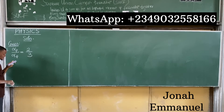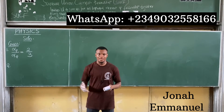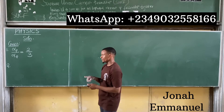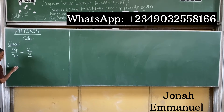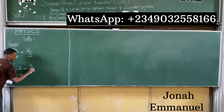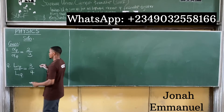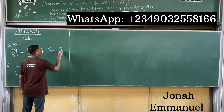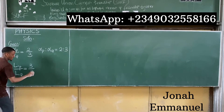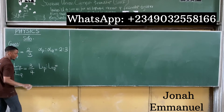Next, it says the ratio of their lengths is 3:4 respectively. When they say 'respectively,' it means according to the arrangement — P is mentioned before Q — so the ratio of the length of P to the length of Q is 3:4. So L₁_P over L₁_Q equals 3/4.